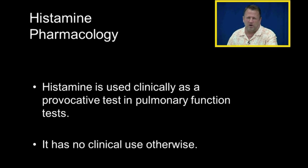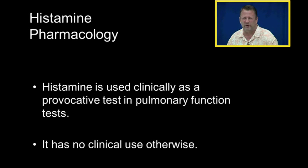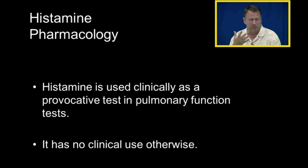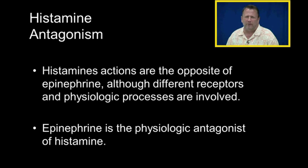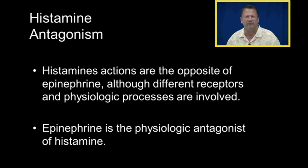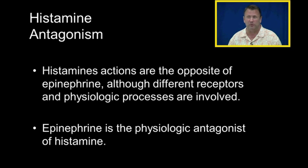Histamine is used clinically as a provocative pulmonary function test to assess how sensitive an asthmatic is to histamine — a small amount is given to measure how much their lung function worsens. Histamine's actions are exactly the opposite of epinephrine; different receptors and physiologic processes are involved. Epinephrine is the physiologic antagonist of histamine, which is why we give epinephrine to counteract the effects of histamine during an allergic reaction.